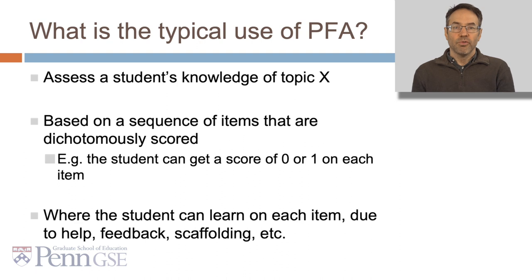So what's the typical use of PFA? To assess a student's knowledge of Topic X based on a sequence of items that are dichotomously scored. In other words, the student can get a score of 0 or 1 on each item, where the student can learn on each item due to a variety of things: help, feedback, scaffolding, and so on.